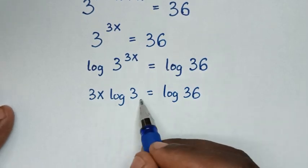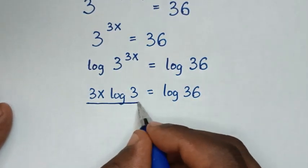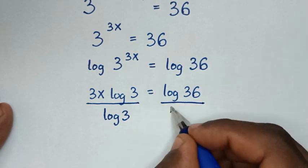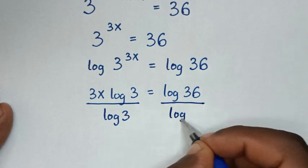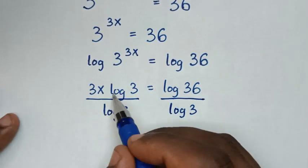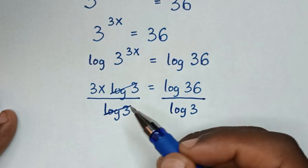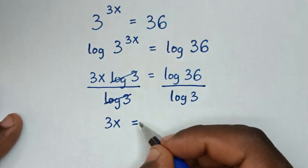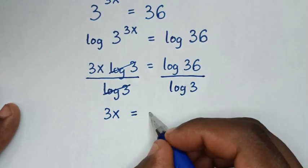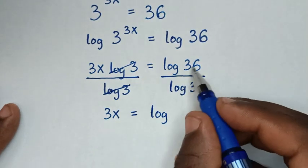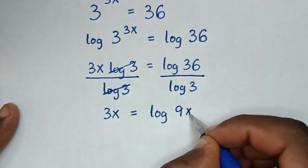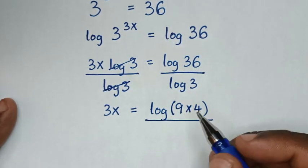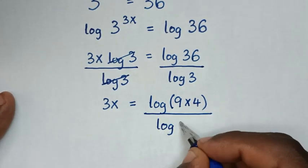Then we divide by log of 3 on both sides. The log of 3 terms cancel, so it will be 3x is equal to log of 36 over log of 3. Now log of 36 is the same as log of 9 times 4, all over log of 3.